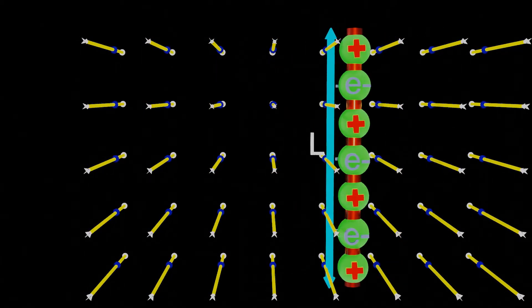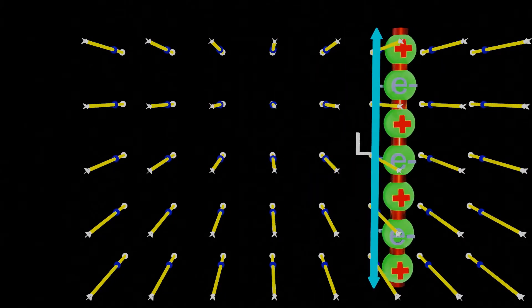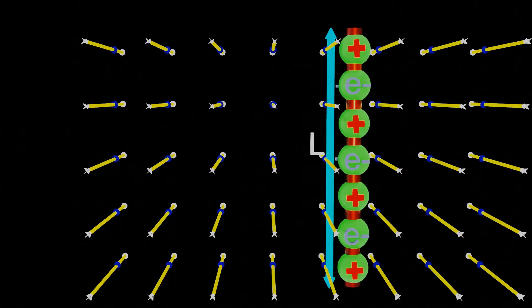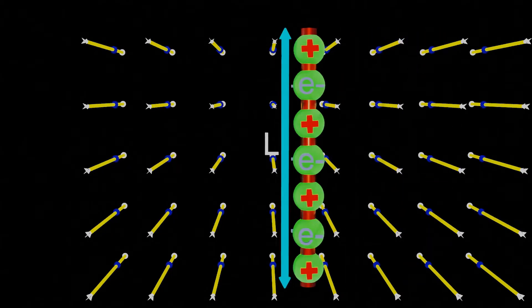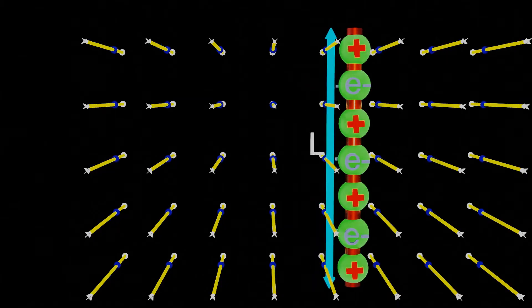Therefore, during this motion of a conductor, positive charges present in the wire will experience a magnetic force QVB according to the left-hand Fleming's rule. And negative charges moves in an opposite direction.